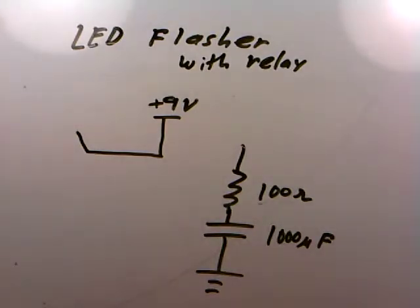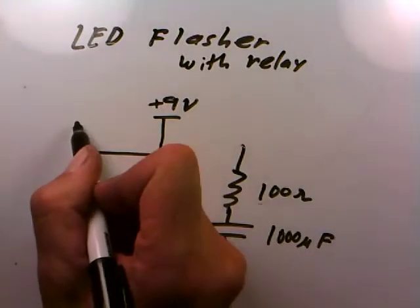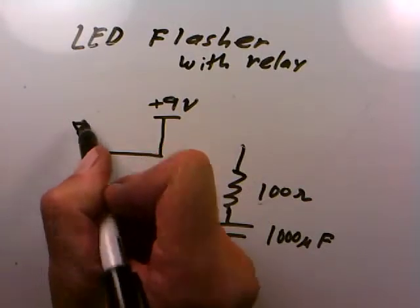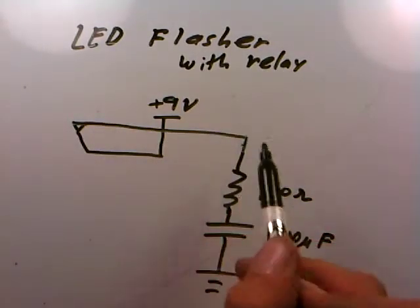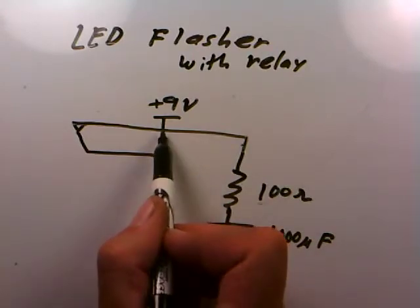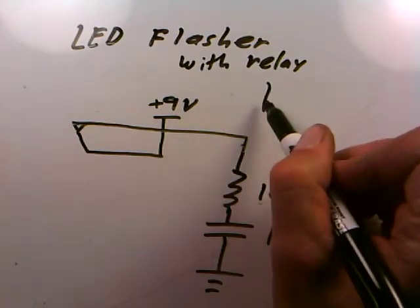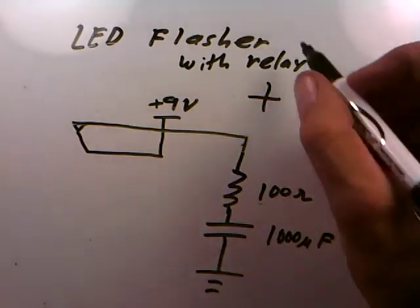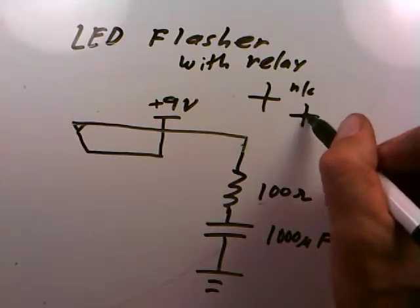When the relay is normally closed, when we just start up the circuit, we're going to route this 9 volts directly to the RC circuit. Be very aware of when two lines cross in electronics. If two lines cross like this, there's no connection. But if two lines cross with a dot there, that means they connect.